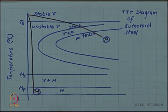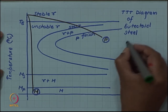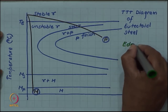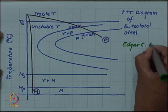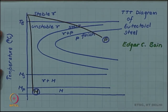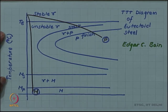This whole business of the TTT diagram — this whole discovery and development of the TTT diagram — was done by an American metallurgist named Edgar C. Bain. When he was developing these diagrams, he decided to isothermally cool austenite quenched from very high temperature.